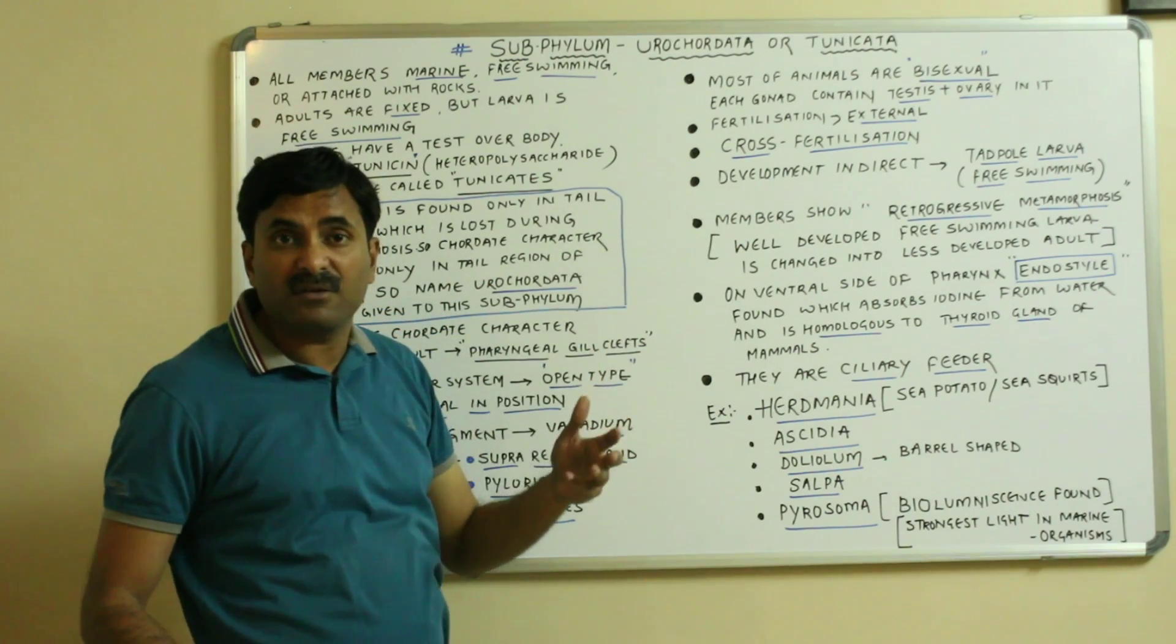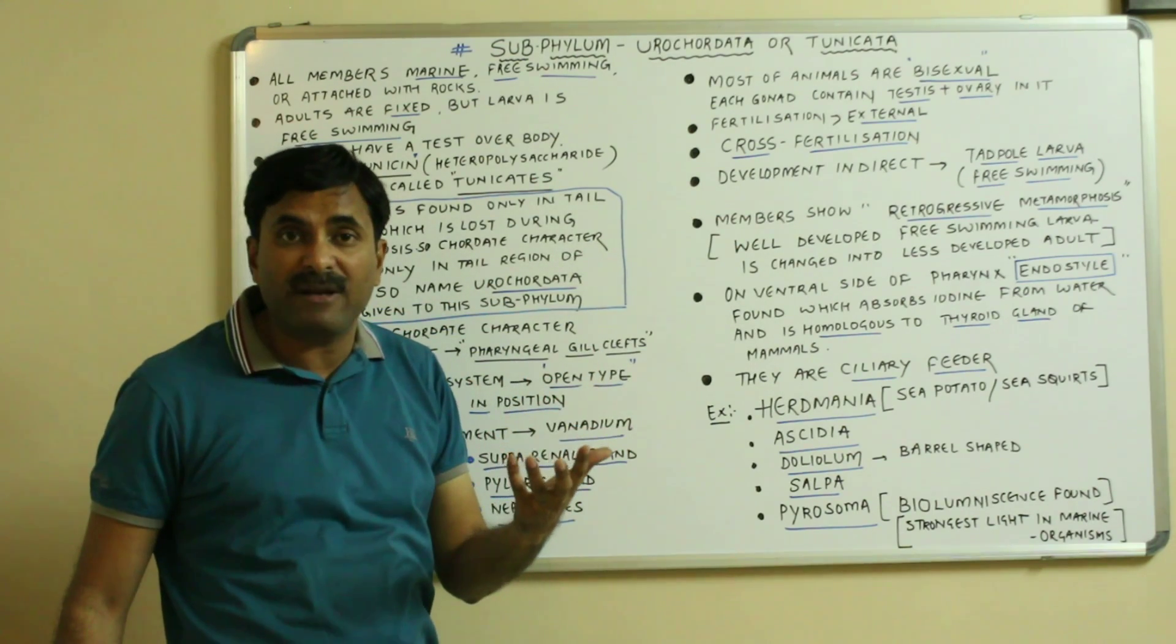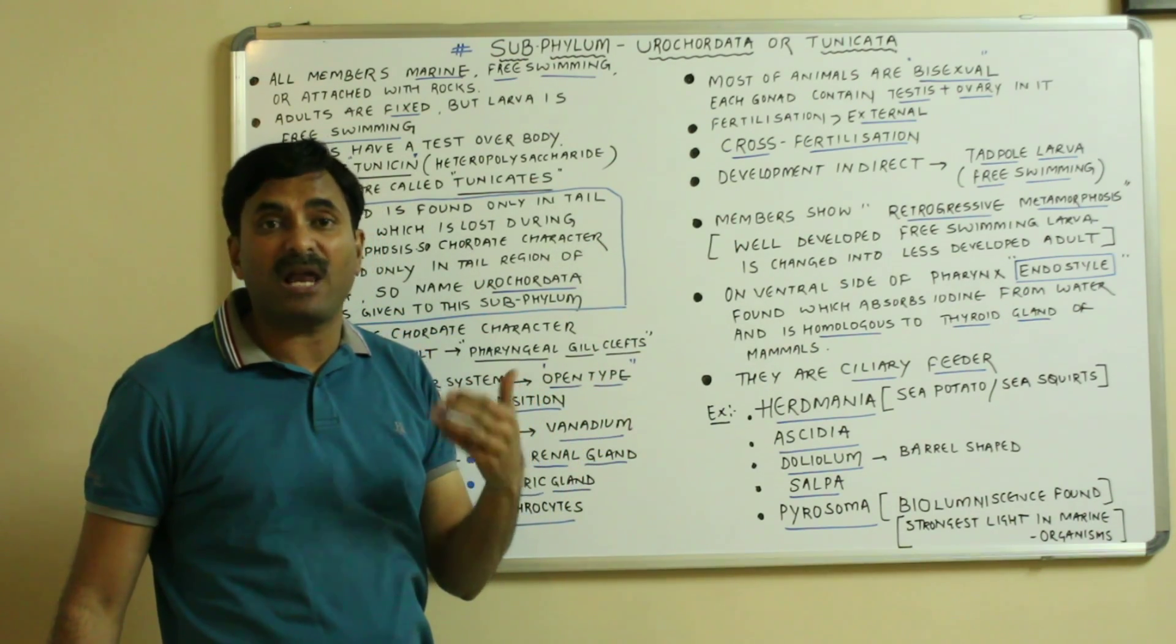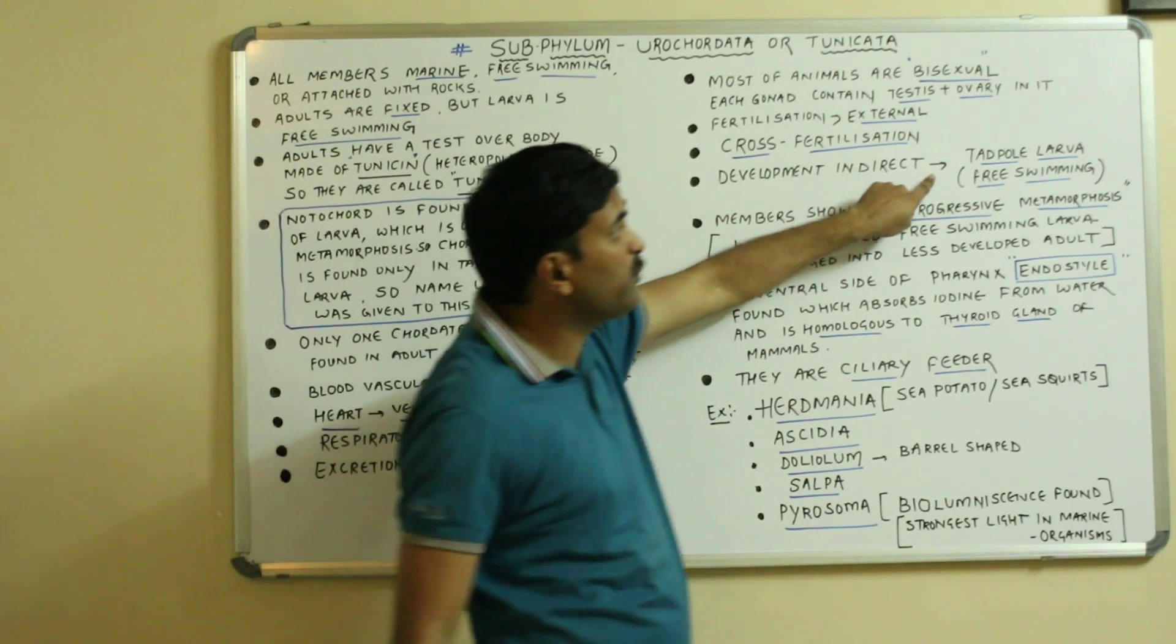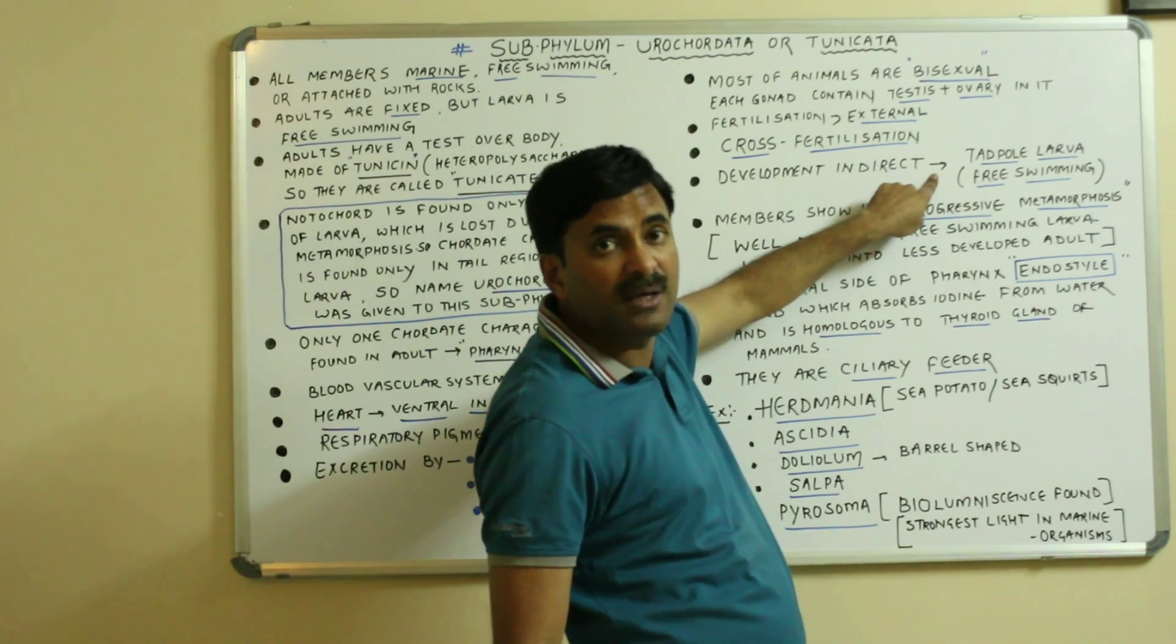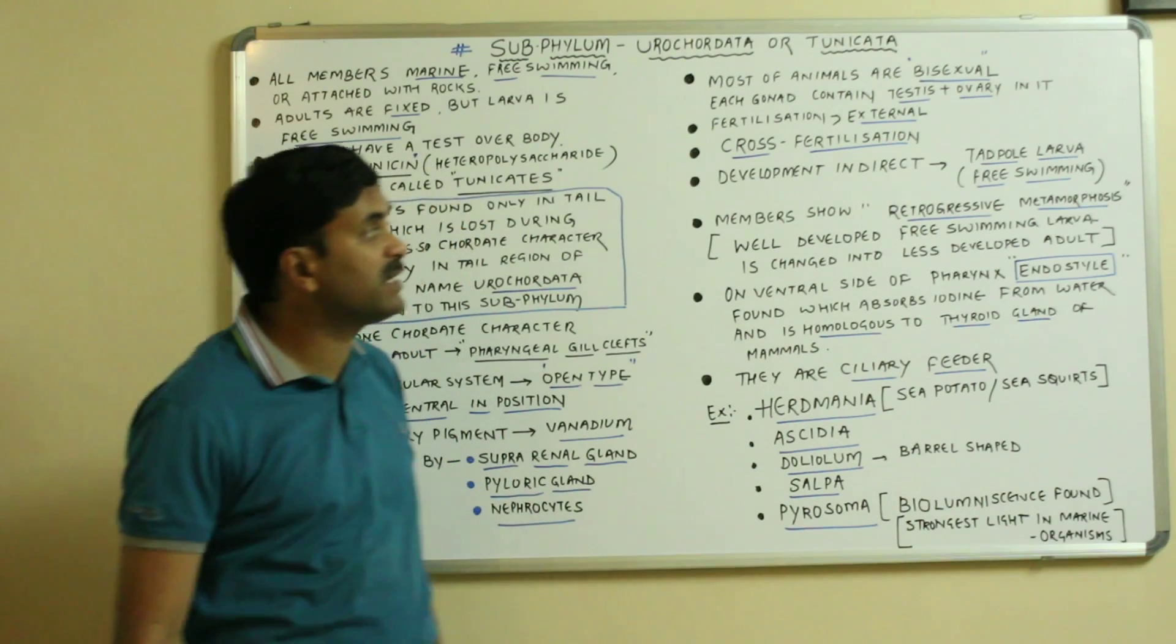The development is indirect. What is indirect development? We know very well that the development is through the larval stages and therefore they have a free swimming larva and that free swimming larva is called the tadpole larva.